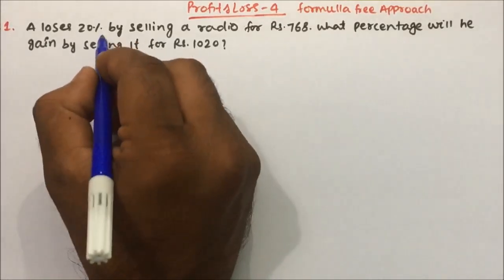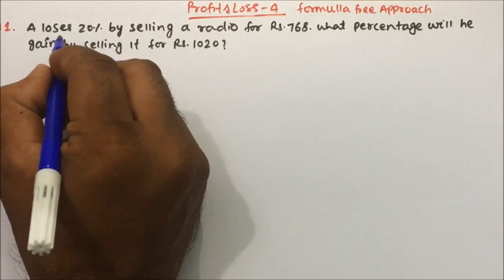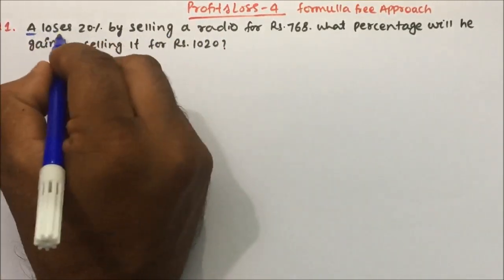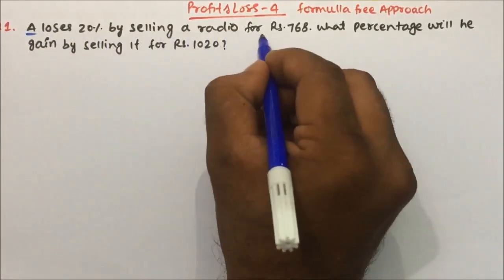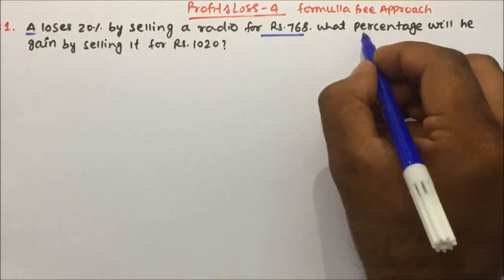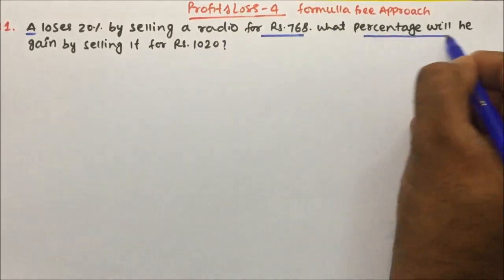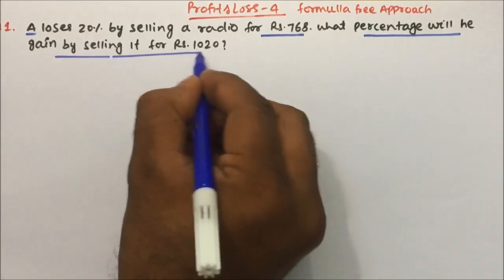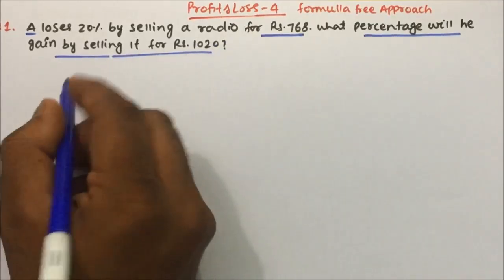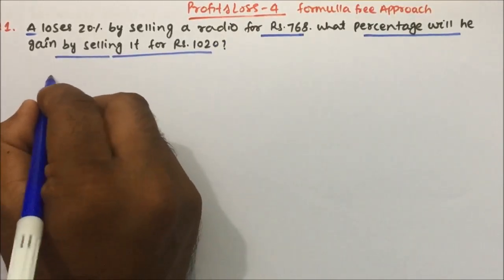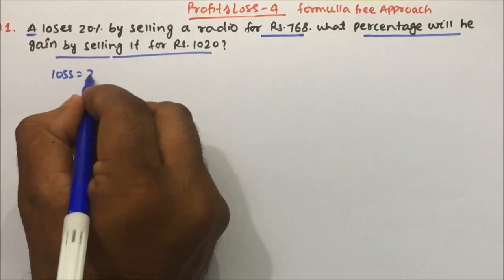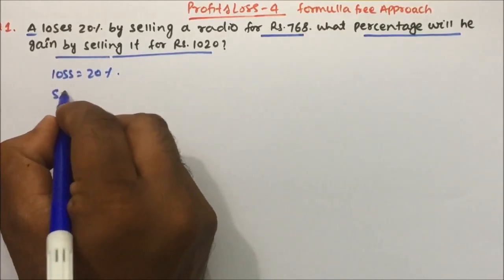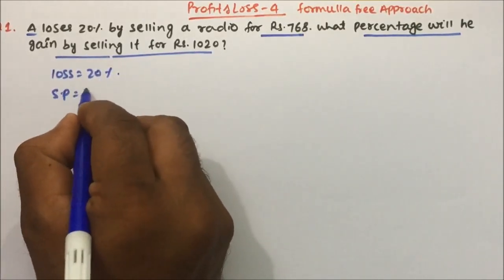The question is: A person incurs a loss of 20% by selling a radio for 768 rupees. What percentage will he gain if it is sold for 1020 rupees? So the loss is 20% and the selling price is 768 rupees.